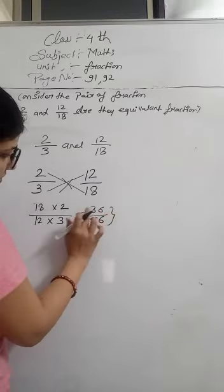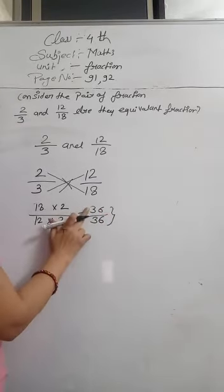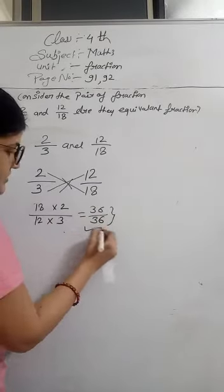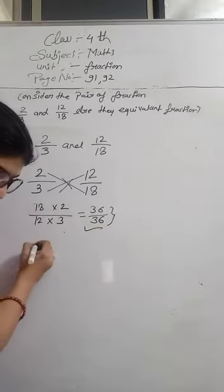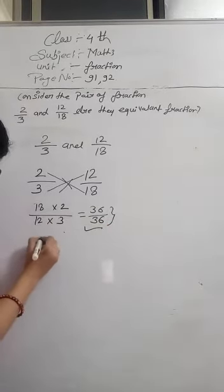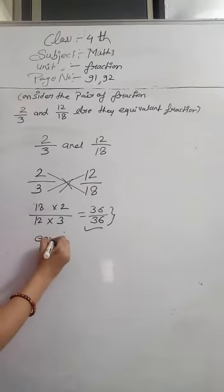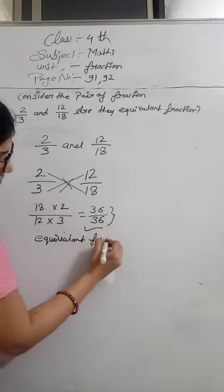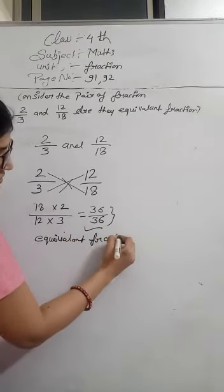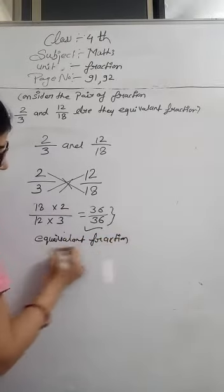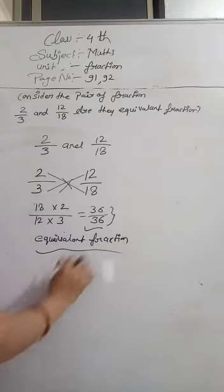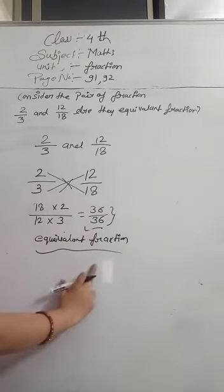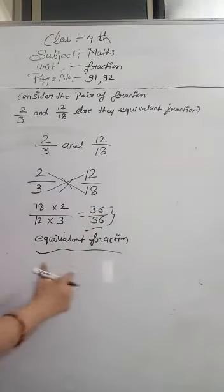We can see here 36 and the other side is also 36. So this is an equivalent fraction. If the numerator and denominator results are the same, so these are equivalent fractions.